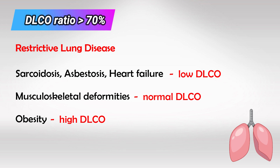In sarcoidosis, asbestosis, and heart failure, the alveolar wall is very thick, so diffusion is less. In muscular deformity, the patient may have breathing problems but the alveoli themselves are completely healthy, so DLCO will be normal. Obesity has high DLCO, likely due to expansion of volume and hypervascularity as well.